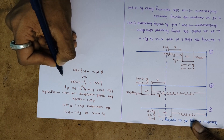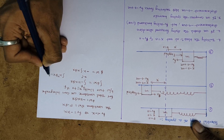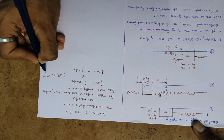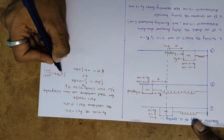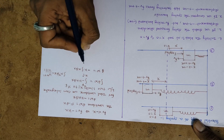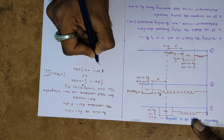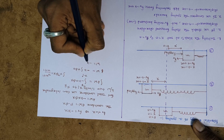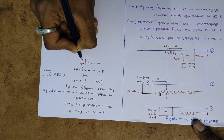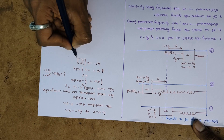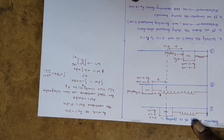Using the integration formula — integral of x to the power n dx equals x to the power n+1 divided by n+1 — we get: work done W equals minus k times x squared over 2, evaluated from initial displacement x_i to final displacement x_f.